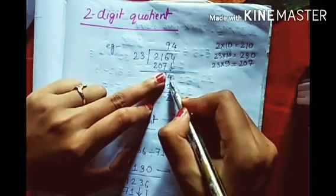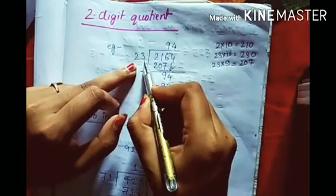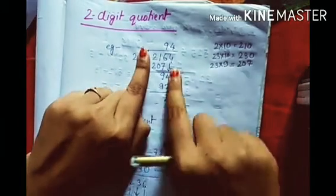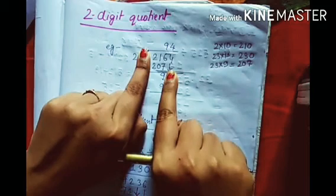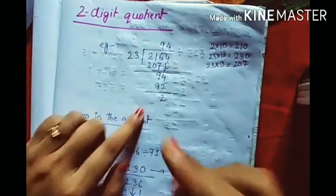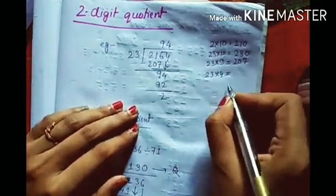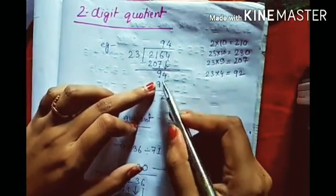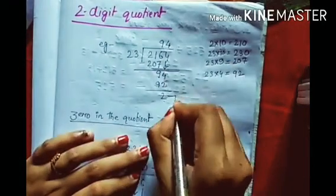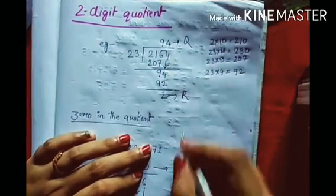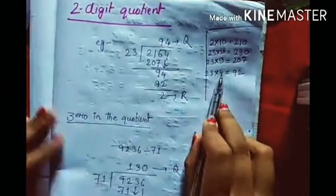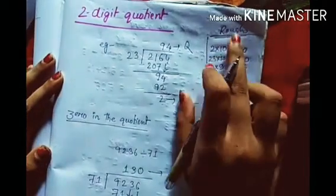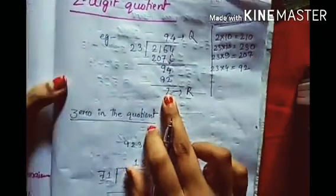Since 4 is remaining in the dividend, it comes down making 94. Now dividing 94 by 23: cover the ones digits - 2 and 9. We know 4 twos are 8, so we try 4. 23 times 4 equals 92. Since 94 is greater than 92, we write 4 times - remainder is 2. So the quotient is 94 and remainder 2. This rough work I've shown here - you can also do it on the right side of your copy.